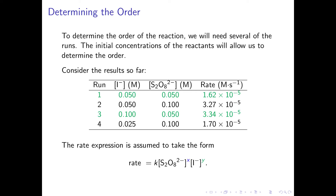Likewise, to determine the order with respect to the iodide ion, or y, we use runs one and three. In this case, the peroxydisulfate ion concentration remains the same, but the iodide ion concentration increases.